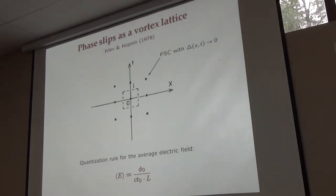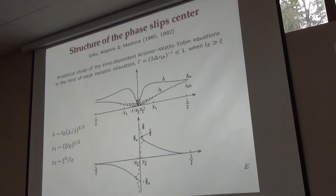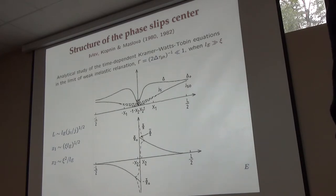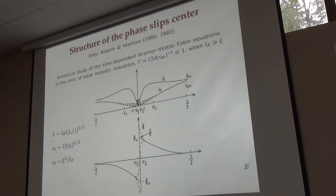There is a nice quantization rule here. If you calculate the flux through the unit cell — the area of the unit cell is c*T0 times L — and this is the average electric field in the structure, then you get the superconducting flux quantum. Once you know the parameters of the flux lattice, you know the average electric field and the voltage across the wire. What was done by Nikolai: he looked at this time-dependent Ginzburg-Landau equation in the most interesting limit when the charge-imbalance relaxation length is larger than the coherence length, and without any numerical solution, by just analyzing the time-dependent equation, he managed to extract the structure of the phase slip center.